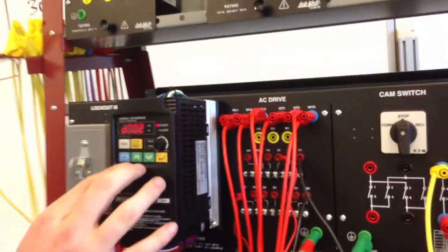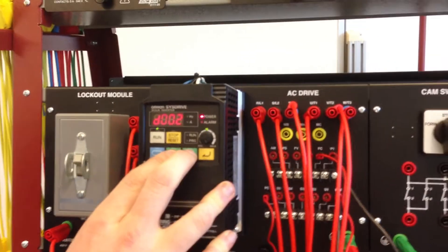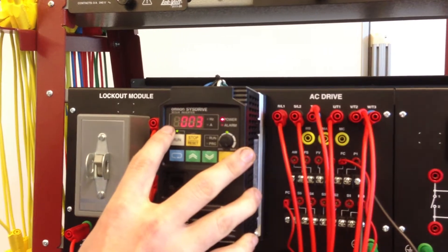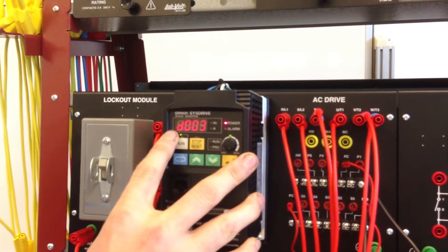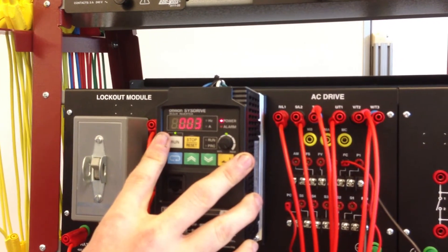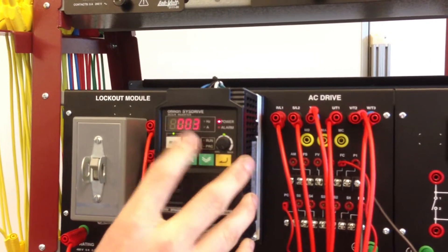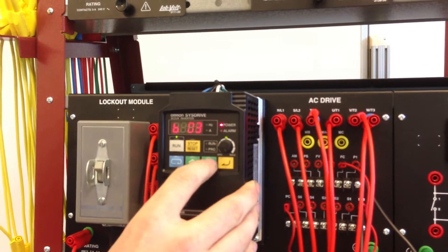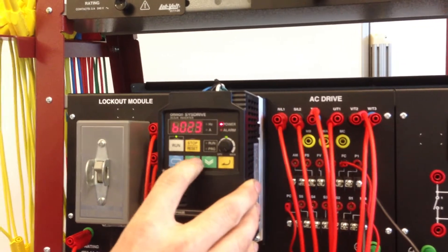Now if you'll remember Omron SysDrive if you would like to quickly change through the parameters you hit both greens at the same time and you see we have blinking on the first indicator there. So the next parameter I wanted to talk about though was the B22 so we're going to go ahead and set this to B22 so we got B, enter, 0 and 22.